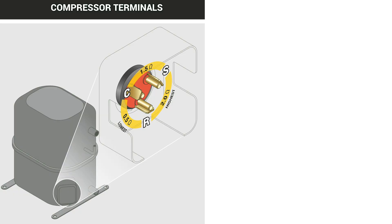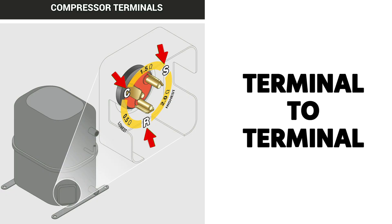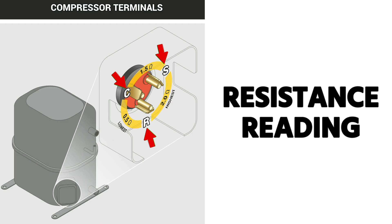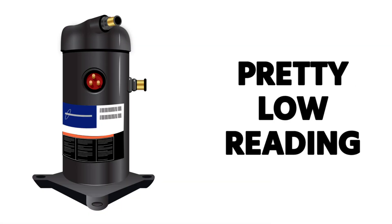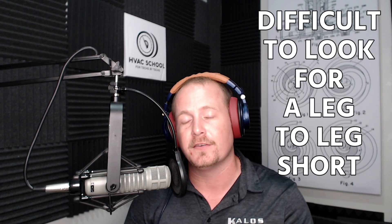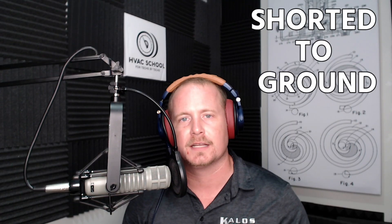Just to talk briefly about this in terms of a compressor — on a typical single phase compressor you have your common, your start, and your run. If we're measuring for an open, we measure from terminal to terminal and we see if we have continuity or if we have a resistance reading in between all of them. Generally on compressors that's going to be a pretty low reading. If you want to check for a short, then you take each terminal and you measure to ground. It's very difficult to look for a leg-to-leg short. It was shorted leg-to-leg is actually pretty rare. It can happen, but more often than not it's going to be shorted to ground.